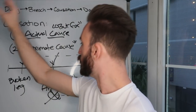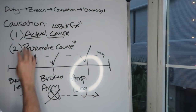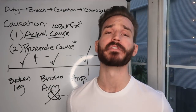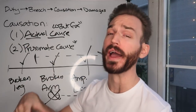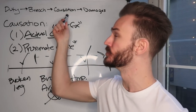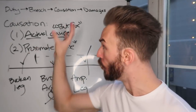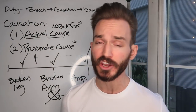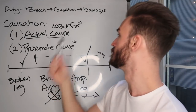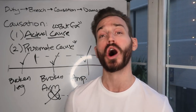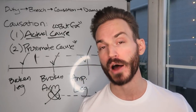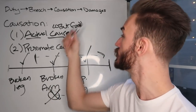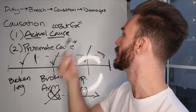So that's really all of the issues that can be covered with actual and proximate cause. The plaintiff must establish both actual and proximate cause to satisfy the causation element. At this point we've covered duty, breach, and causation. All that's left to discuss is damages. If the plaintiff can establish all four elements by preponderance of the evidence, he'll be able to hold the defendant liable for negligence. In the next video, we'll finish our discussion of negligence by talking about damages.